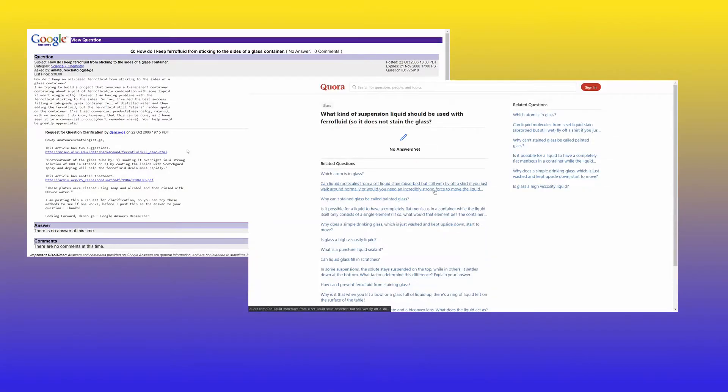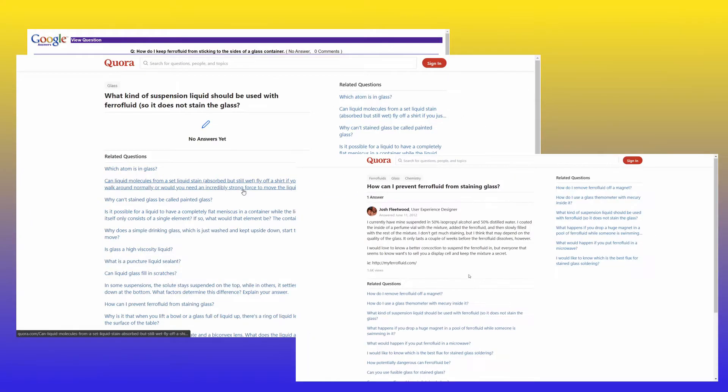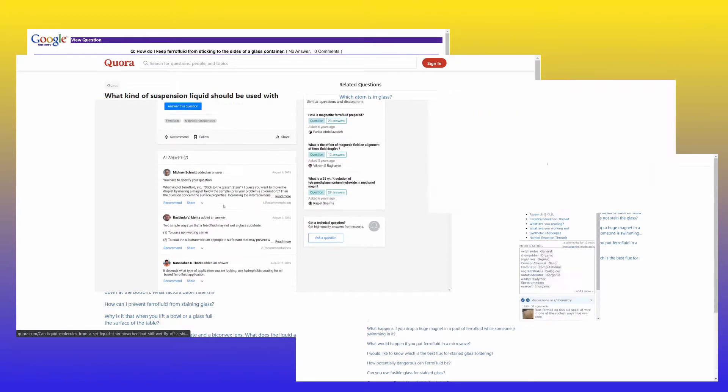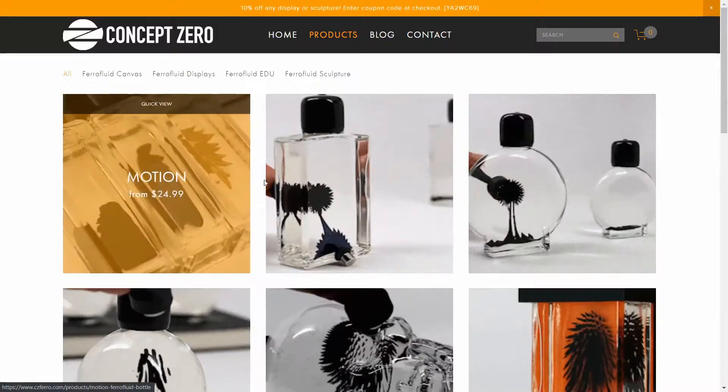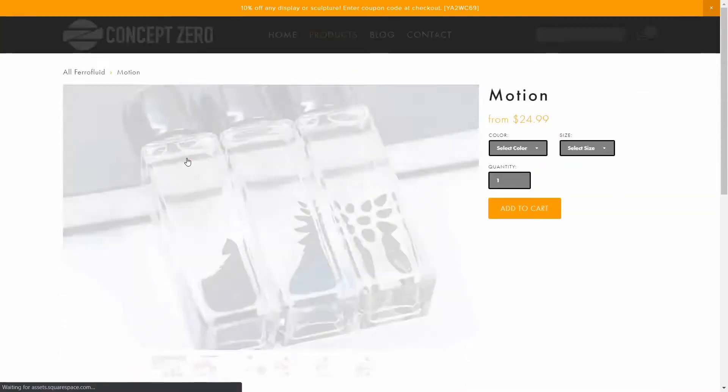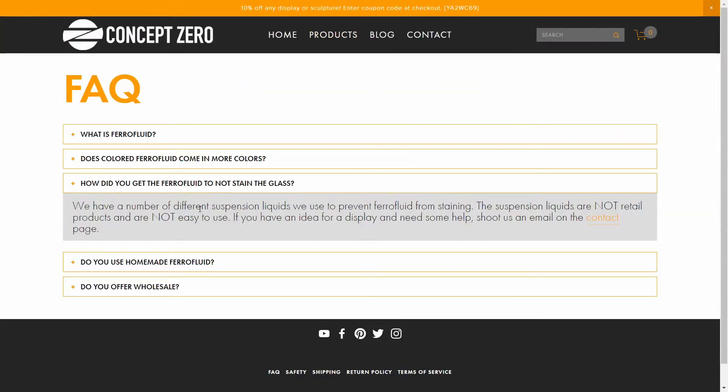This staining problem has been the topic of some online discussion dating back to at least 2012, mostly centering around the liquid used to suspend the ferrofluid. Indeed, even the commercial products shown in these original videos make a big deal about their proprietary suspension fluids that prevent the staining.